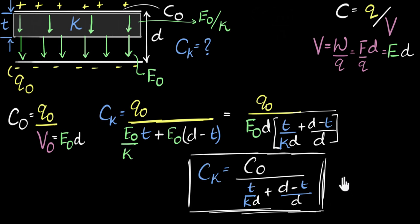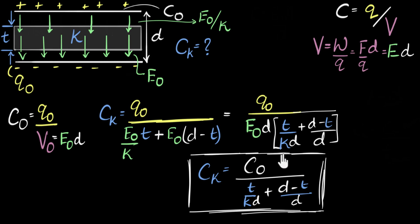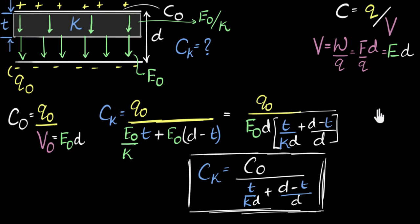Before I go, I want to leave you with a couple of questions. First: what would happen if instead of inserting the dielectric at the edge, we inserted it somewhere in the middle? Same dielectric constant, same thickness — would the capacitance be the same or different? Think about it using the same logic. Second: consider the special case where T equals D, meaning the whole space is filled with the dielectric. What does our equation simplify to, and does that make sense?